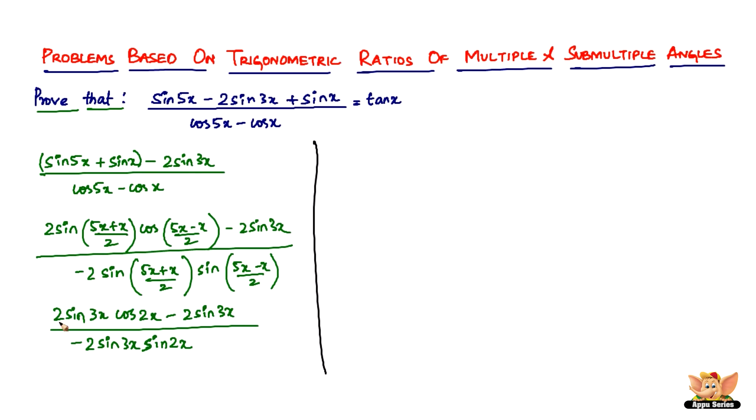So now let's continue from here. We have, if you consider these two terms, we have 2 sine 3x as a common term. So what I'll do is I'll just take it out as common here. So it'll be 2 sine 3x open bracket cos 2x minus 1, divided by minus 2 sine 3x sine 2x. 2 sine 3x gets cancelled.